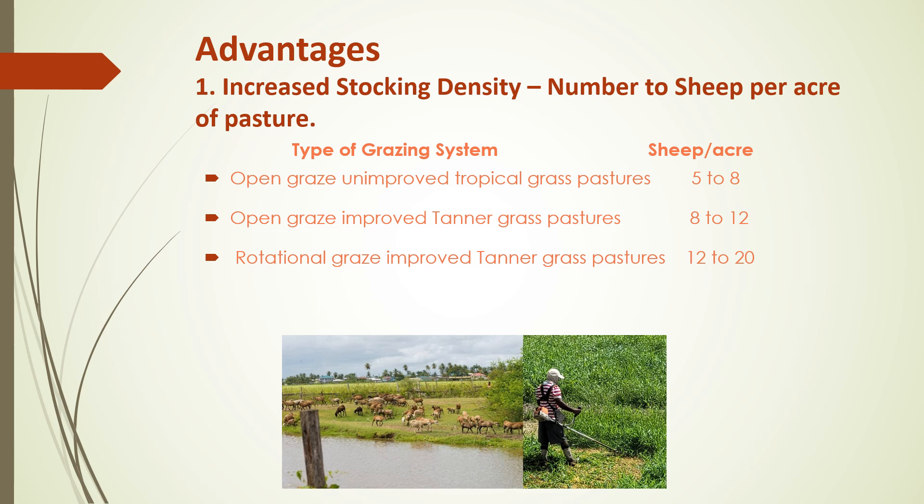Open grazing improved undergrass pastures, you can get between 8 and 12 sheep per acre. If you rotationally graze improved undergrass pastures, you can get between 12 and 20 sheep per acre. However, if you zero graze using grass from improved undergrass pastures, you can maintain a stocking density of over 35 sheep per acre.